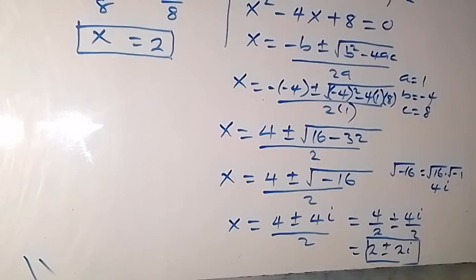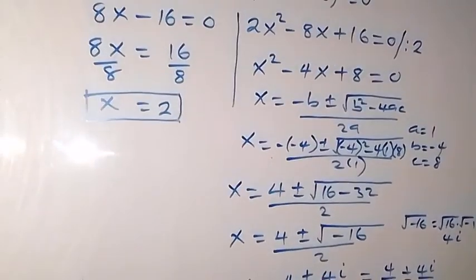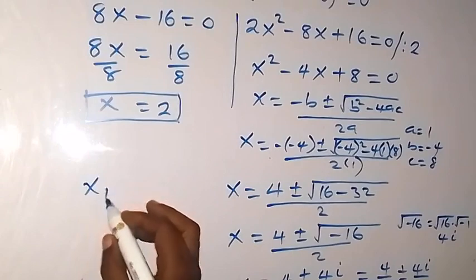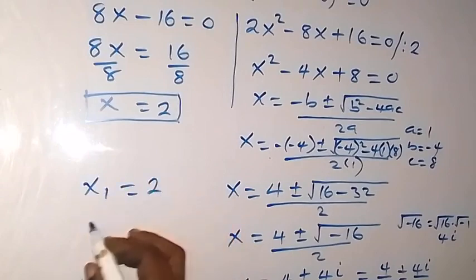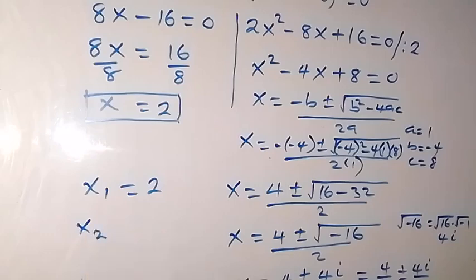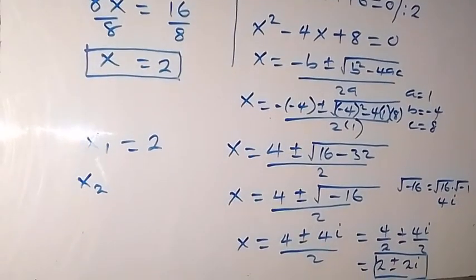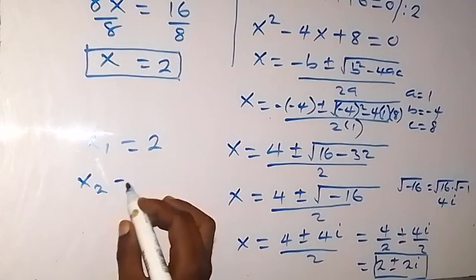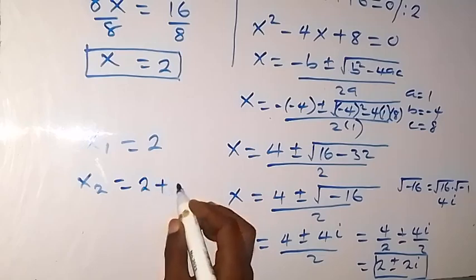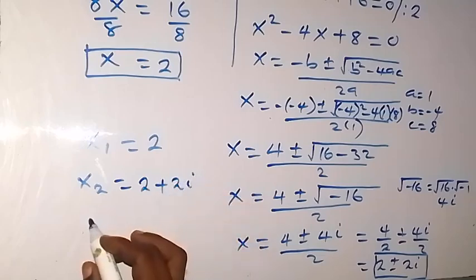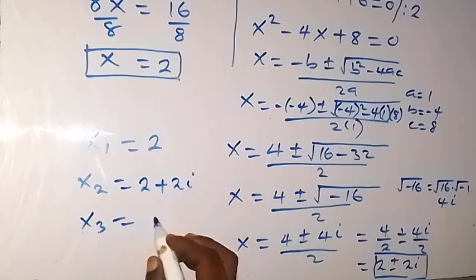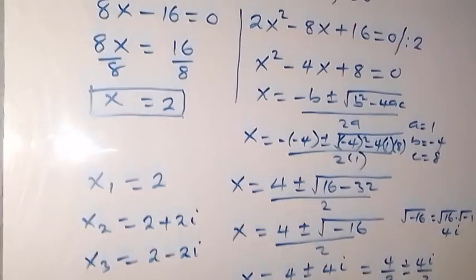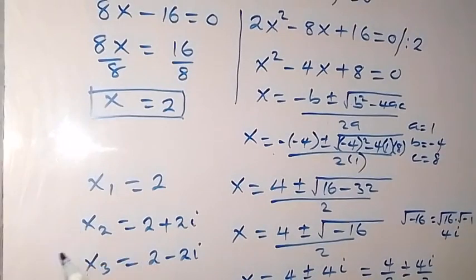So our three solutions are: x₁ equals 2 (the real solution), x₂ equals 2 plus 2i, and x₃ equals 2 minus 2i. These are all the solutions for this particular problem.